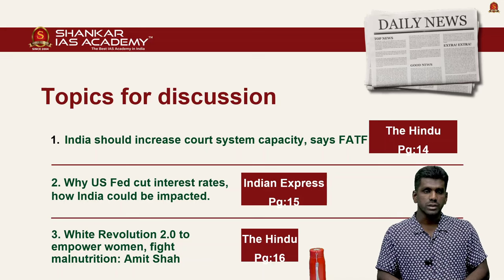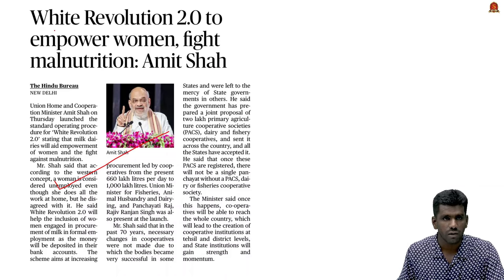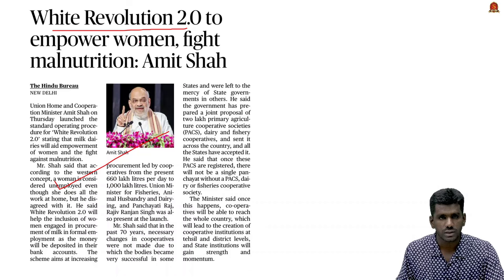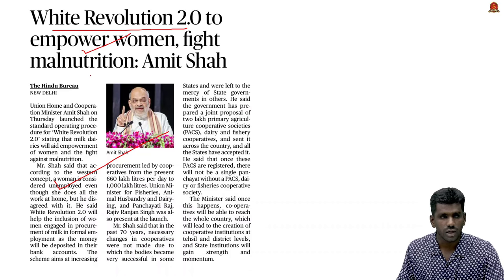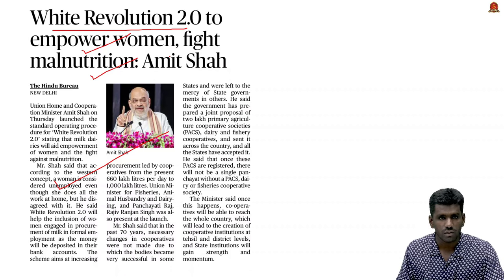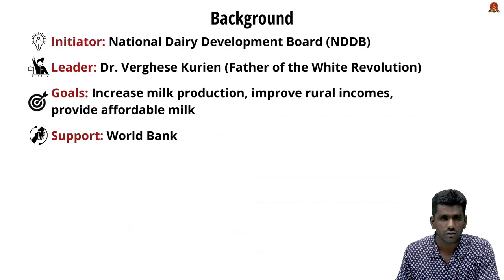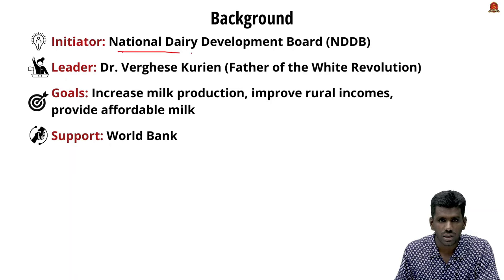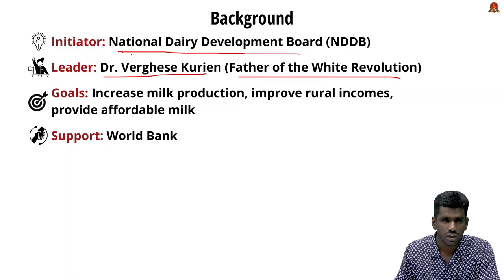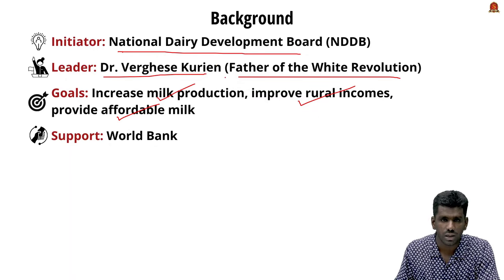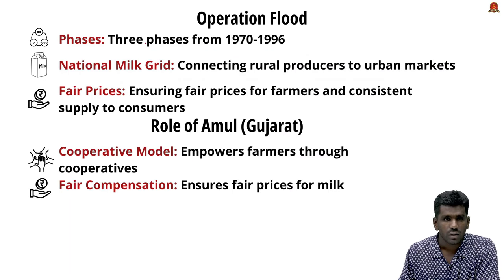Union Home Minister Amit Shah has unveiled the plan for White Revolution 2.0, introducing the standard operating procedure for it. He said this will empower women and help reduce malnutrition. The White Revolution was first introduced in India in 1970 under the National Dairy Development Board, headed by Dr. Verghese Kurien, known as the father of the White Revolution. Its aim is to increase milk production, improve rural income, and provide affordable milk — increasing the affordability, accessibility, and availability of milk in India.